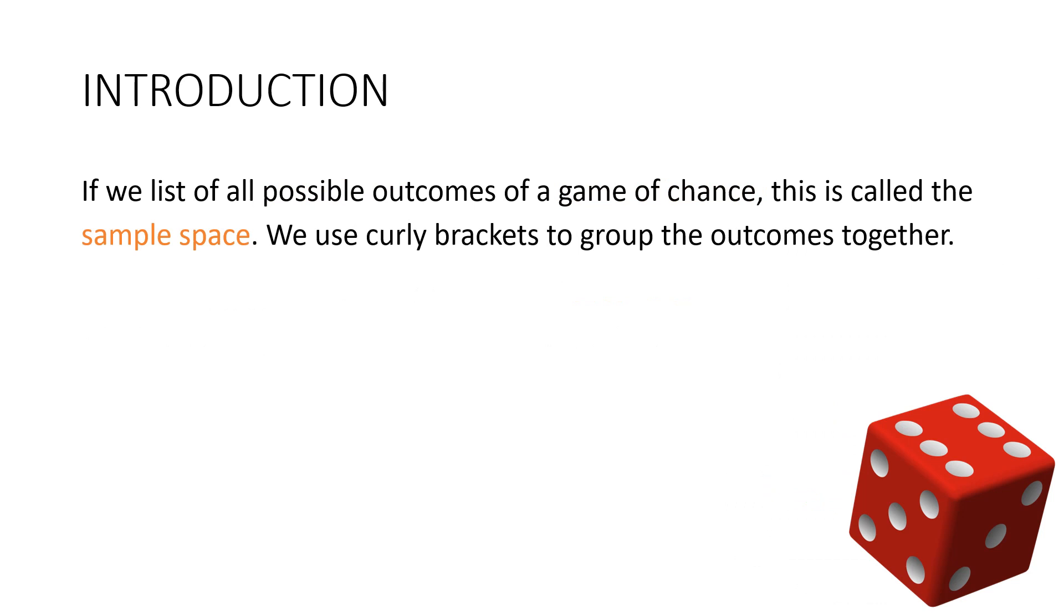Now if we list all of the possible outcomes of a game of chance, this is called the sample space, and we use curly brackets to group the outcomes together. So for example if we throw a six-sided die then the sample space is one, two, three, four, five, six. And you can see how we separate those with commas and put them in curly brackets.